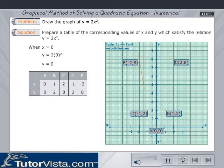Now join the points and what we get is a parabola. Therefore, the graph of y is equal to 2x square depicts a parabola.